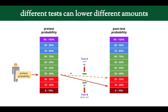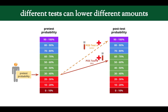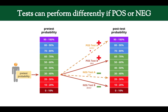Different tests can change your probability by different amounts. Test A is not so great when negative — it only brings you from 33% down to about 27% — whereas Test B does much better, dropping it to 13%. On the positive side, Test B only gets you from 33% to about 57%, whereas Test A shoots you up to about 95% post-test probability, making Test A much better when positive.